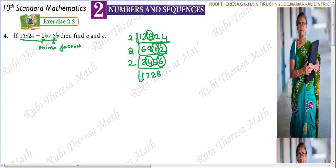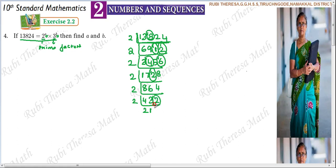2 eights are 16. Again another 2 table. So 2 eights are 16. Remainder 1 — 12. 2 sixes are 12. 2 fours are 8. 2 fours are 8. 2 threes are 6. 2 twos are 4. 2 twos are 4. 2 ones are 2. Remainder 1. 12 becomes 6 times.